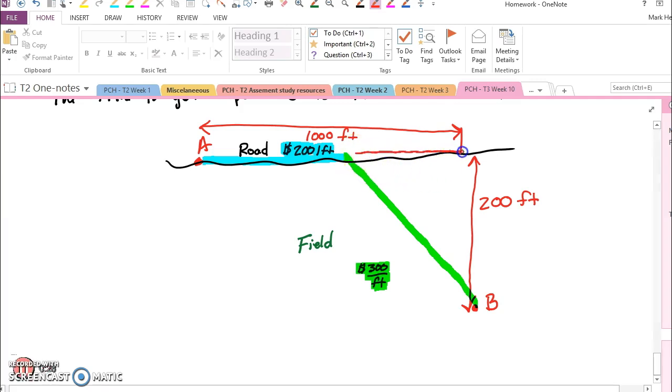we're going to set up with variables. So this is some unknown length x. That means the portion along the road is 1000 minus x.